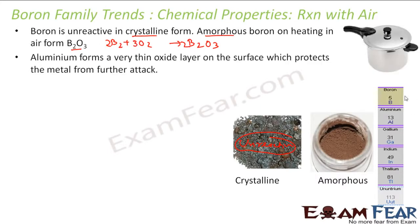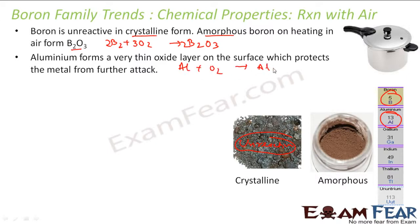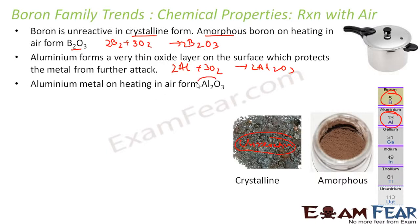For aluminium, it forms a thin layer of oxide on the surface which protects the metal from further attack. When aluminium reacts with oxygen, it forms a quick Al2O3 coating which protects it from further corrosion. That's why it is used in utensils — the moment it reacts, it forms a protective layer. The balanced reaction is: aluminium reacts with oxygen to give Al2O3. So Al2O3 is the protective coating.